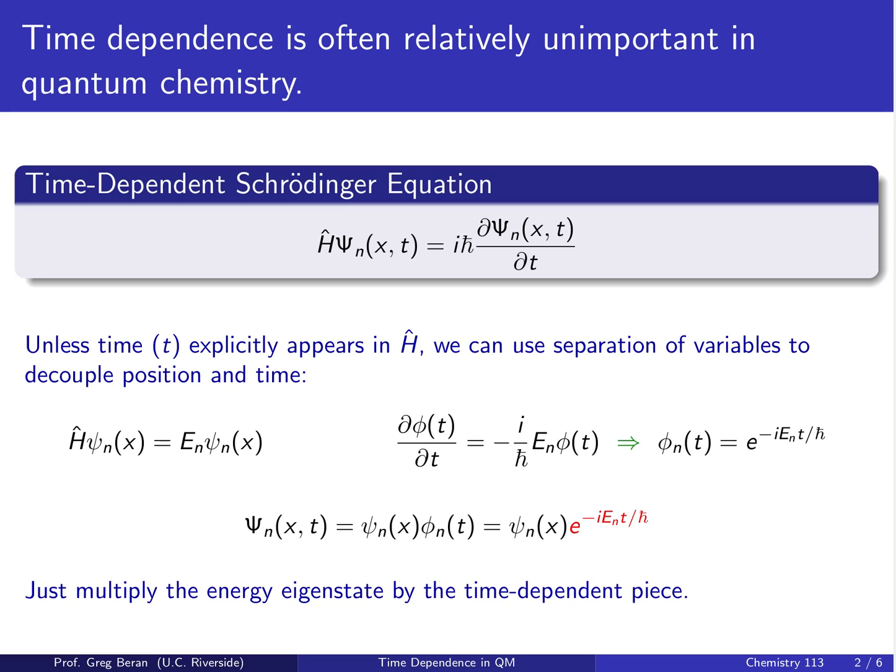In principle, we're always starting from the time-dependent Schrödinger equation shown here. However, unless time actually appears as a variable in your Hamiltonian, you can use separation of variables to decouple position and time, and break it up into the time-independent Schrödinger equation.